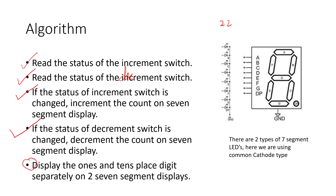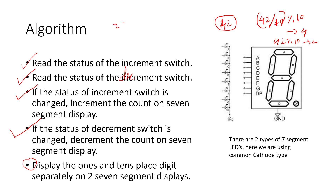To extract each digit, use the modulo operator. For example, with the number 42: if you divide 42 by 10 and then do modulo division by 10, you get 4 — the tens digit. If you simply do 42 modulo 10, you get 2 — the units digit. So for any number, dividing by 10 then modulo 10 gives the tens place digit, and direct modulo 10 gives the units place digit.